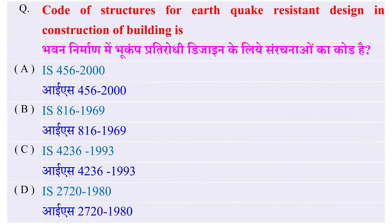Code of structures for earthquake resistance design in construction of buildings — भवन निर्माण में भूकम्प प्रतिरोधी डिजाइन के लिए संरचनाओं का Code निम्न में से कौन सा है? Options: IS-456-2000, IS-816-1969, IS-4236-1993, IS-2720-1980 — and the right answer is IS-4236-1993।